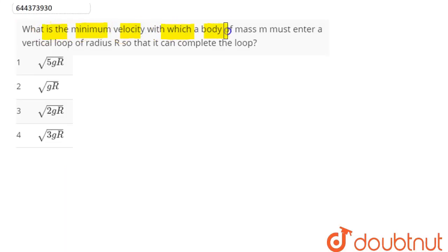That is, in the question it is said that what will be the minimum velocity of a body at the lowest position, which is supposed here as u, so that it can complete the loop.